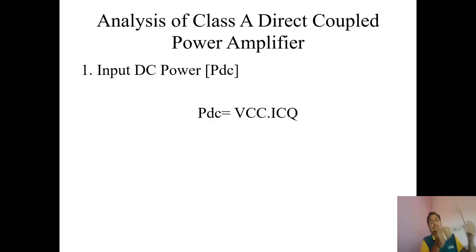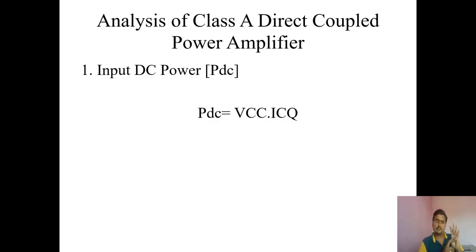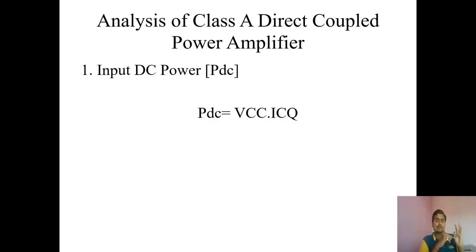Analysis of the Class A direct coupled amplifier means we have to calculate four parameters. How much input power am I taking from VCC? How much output power am I delivering to the load? What is the efficiency in the process of taking input and generating output?